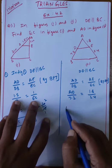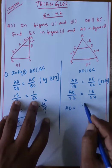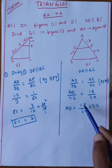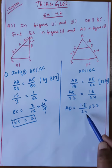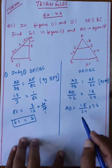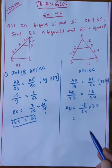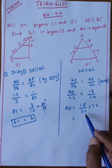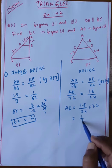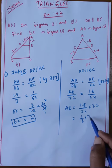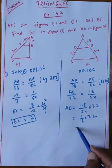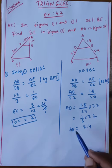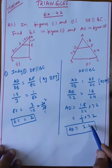AD is found directly by cross multiplication: AD equals 1.8 by 5.4 into 7.2. Simplifying, 1.8 by 5.4 equals 1 by 3. So AD equals 1 by 3 into 7.2, which gives 2.4. Therefore AD equals 2.4 centimeters.